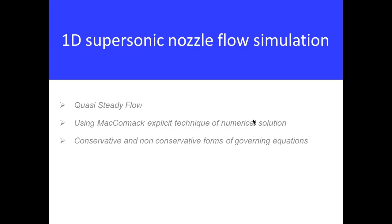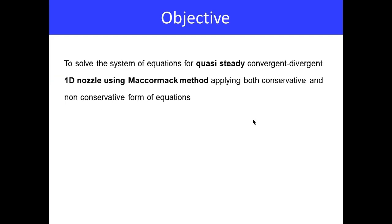We are going to talk about 1D supersonic nozzle flow simulation. We are considering a quasi-steady, one-dimensional nozzle flow and will be using McCormack's explicit technique for the numerical solution. The governing equations we'll consider for this nozzle flow will be of two types: conservative and non-conservative forms. Our objective is to study the system of equations and then solve these governing equations.